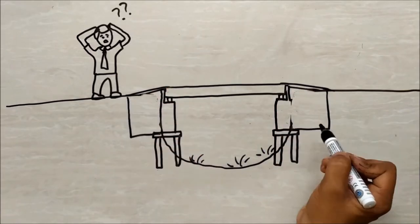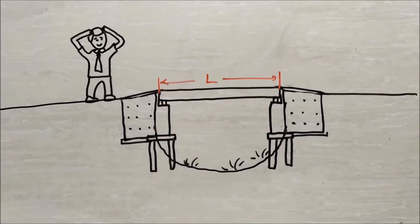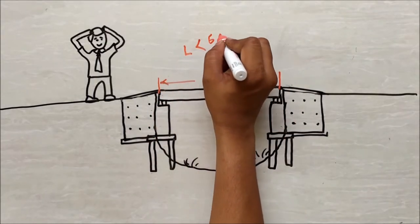And that structure will be called as a bridge when the total length of the structure will be greater than six meters, and the structure having a length of less than six meters is called as a culvert.